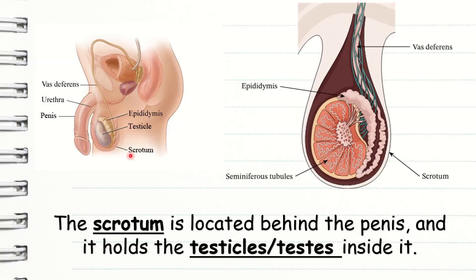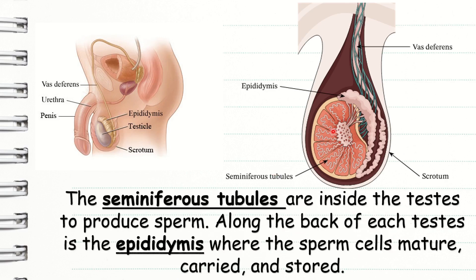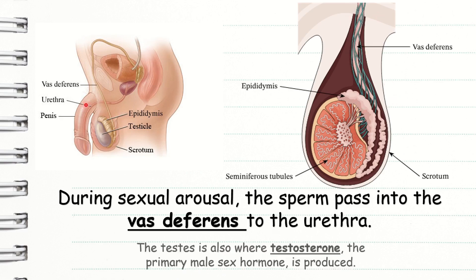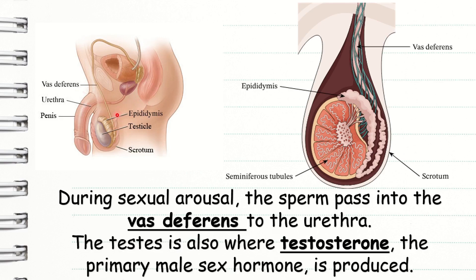The scrotum is located behind the penis. It is loose and pouch-like, and it holds the testicles or testes inside it. The scrotum is located outside the body in order to provide a cooler temperature for the testes, which has seminiferous tubules inside it and produce sperm. Along the back of each testis is the epididymis, where the sperm cells mature, are carried, and stored. During sexual arousal, the sperm pass into the vas deferens to the urethra. The testes is also where testosterone, the primary male sex hormone, is produced.